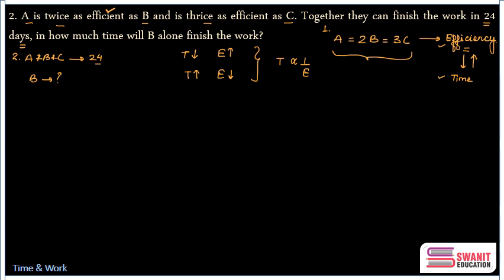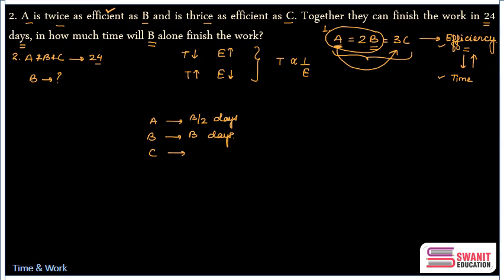Assume B takes B days to finish the work alone — we use B since we need to find B's time. Since A is twice as efficient as B, A takes half the time: B/2 days. Between A and C, A is more efficient, so C takes more time — specifically three times the time taken by A, which is 3B/2 days.